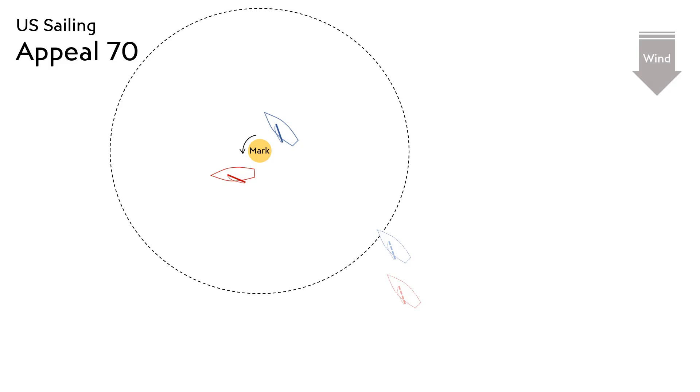When the red boat became overlapped to leeward of the blue boat, Rule 11 required the blue boat to keep clear of the red boat. Under Rule 17, because the red boat had gained overlap within two boat lengths to leeward of the blue boat, the red boat could not sail above their proper course.